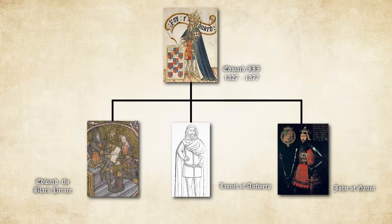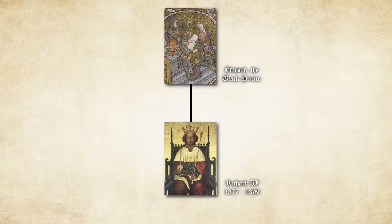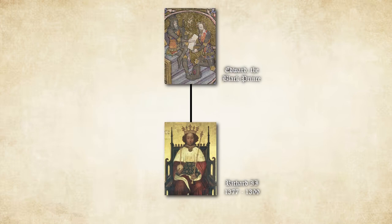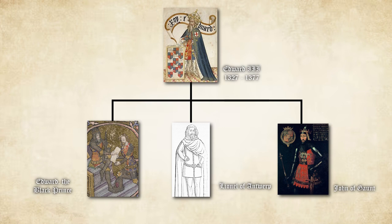Edward the Black Prince should have inherited the throne after his father, but unfortunately he pre-deceased him by around a year, dying in 1376. The Black Prince did have a living son, so when Edward III died the claim passed through him to his son Richard, who became Richard II. Richard II acquired the throne at age 10 and reigned from 1377 until 1399, when he was deposed by his cousin Henry Bolingbroke — the eldest legitimate son of John of Gaunt, the third surviving son of Edward III. Henry declared himself king, becoming Henry IV. With the Black Prince's line now extinguished — no more legitimate descendants — the next eldest brother in seniority was Lionel of Antwerp.